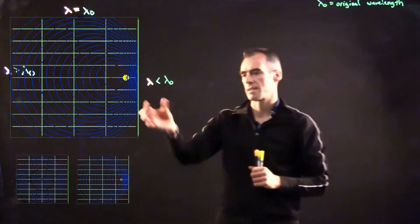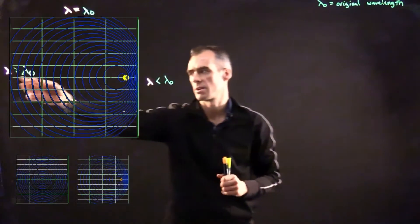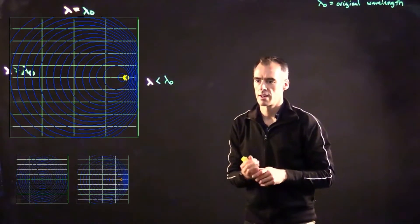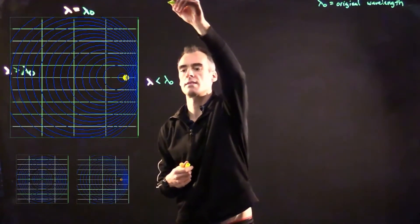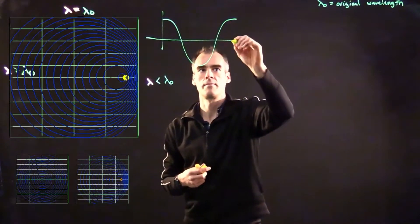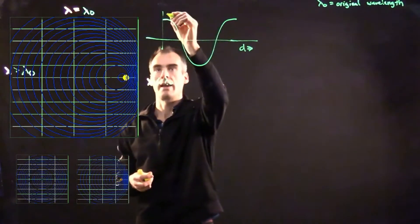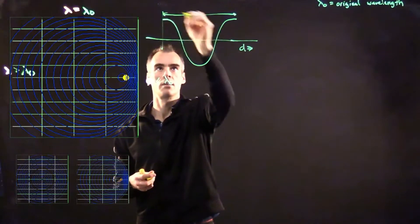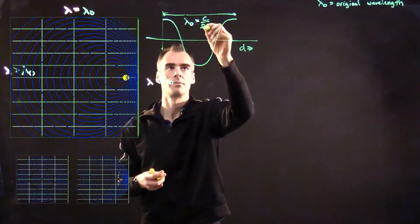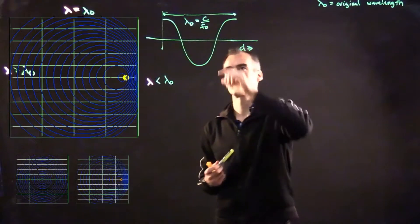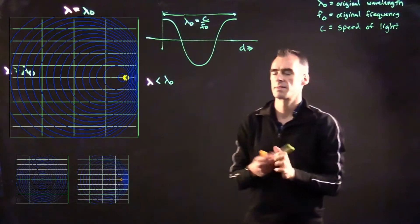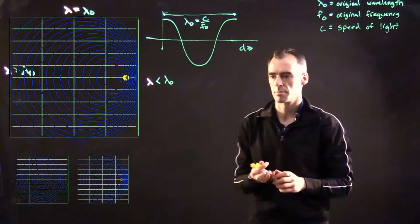So we want to find some kind of equation that accounts for the fact that the wavelength is getting smaller on the approaching side, bigger when the object's moving away, but actually the same if the object's moving perpendicular to it. Let's plot this out. We've got a full wavelength here, and the total distance across is going to be lambda naught, which is equal to C divided by our original frequency F naught, where C is the speed of light.